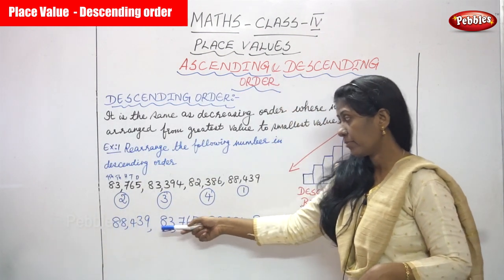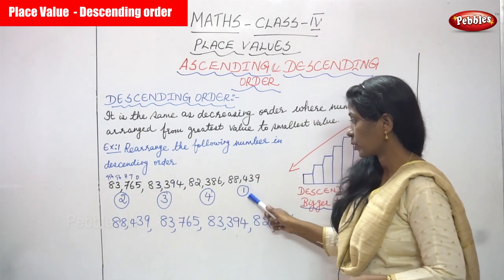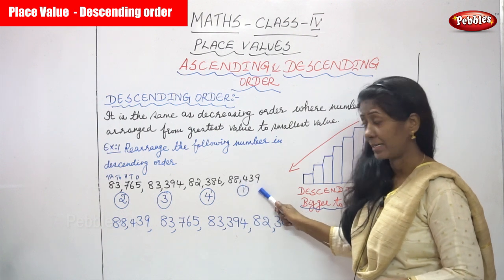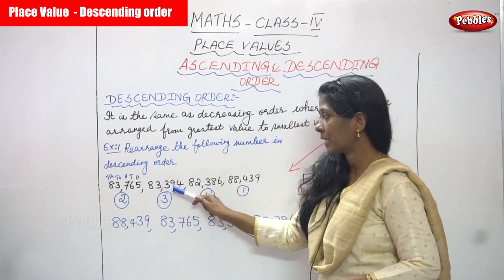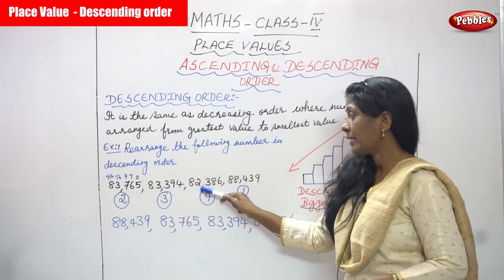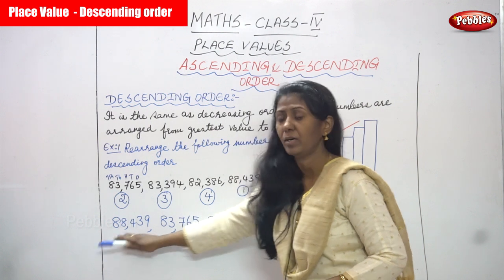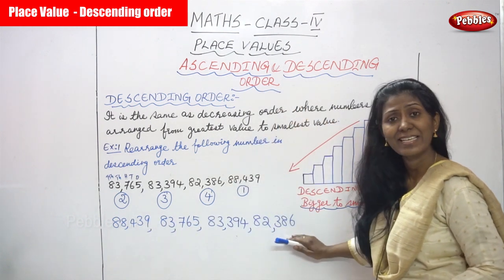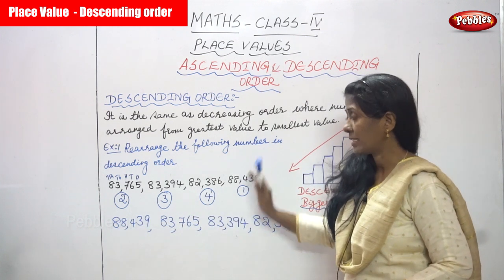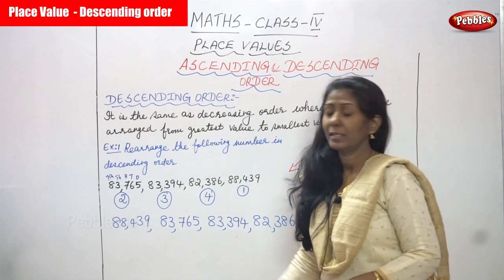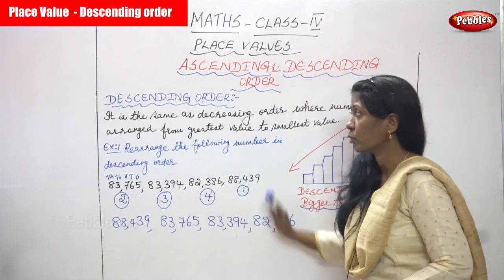We have already found out which is the bigger number and which is the smallest number in this group. First priority goes to 88,439; second priority goes to 83,765; third is 83,394; and last is 82,386. So 88,439 is the biggest number and 82,386 is the smallest number. This is the exact descending order — all numbers arranged according to descending order.